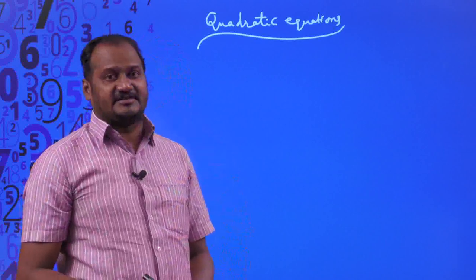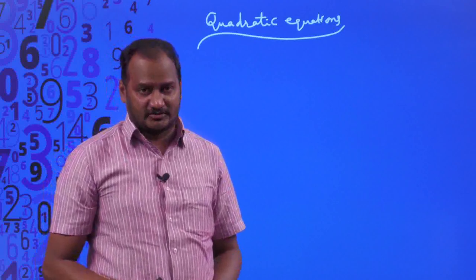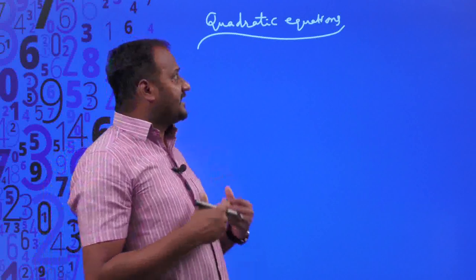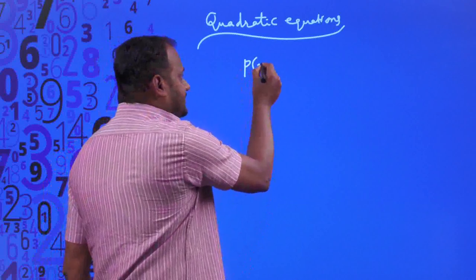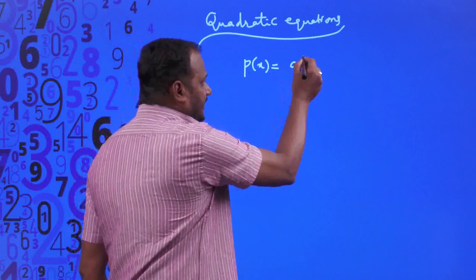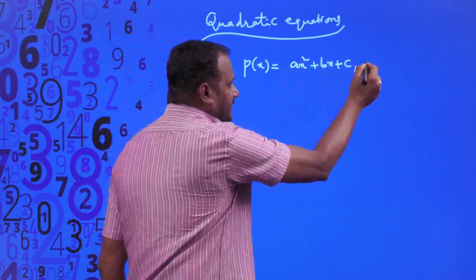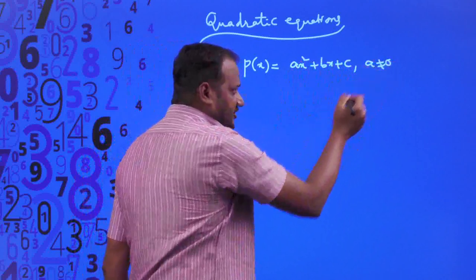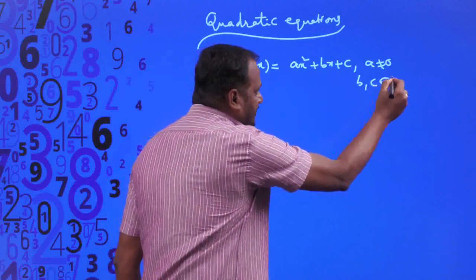A quadratic polynomial is a polynomial whose degree is equal to 2. What is the standard form of a quadratic polynomial? P(x) = Ax² + Bx + C, where A is not supposed to be 0, and B, C are both real numbers.